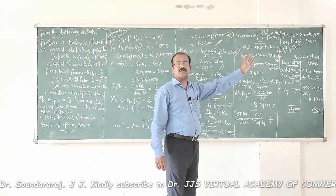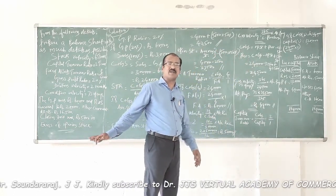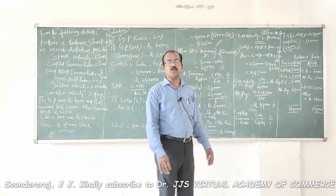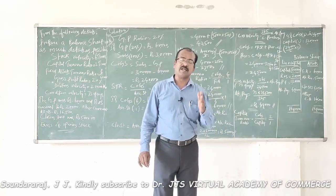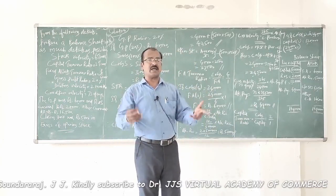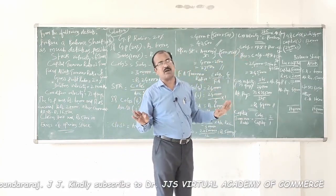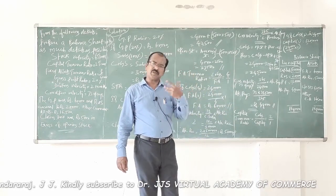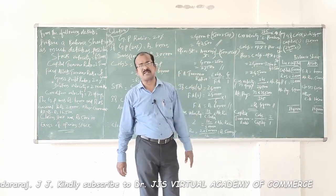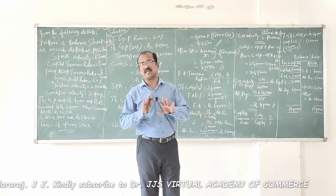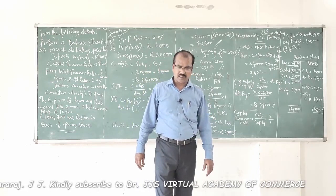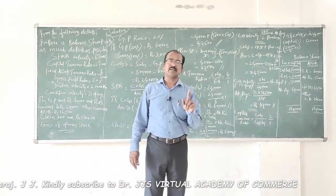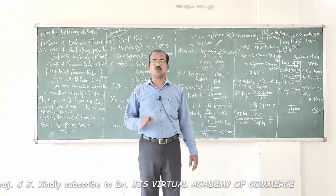Next, let's use creditors velocity. Given in terms of days (73 days), the formula is: 365 days ÷ Credit Purchase × Average Accounts Payable. In the absence of opening accounts payable, we use closing accounts payable. We also need to calculate purchase first — and since there is no information about cash vs. credit purchase, total purchase will be treated as credit purchase.